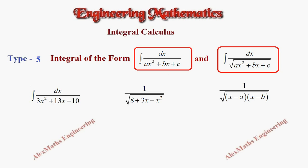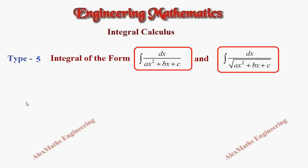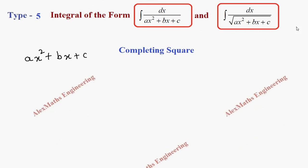First let's discuss the procedure. We have to take the quadratic expression present in the denominator, ax² + bx + c, and we are going to do the completing the square form. The procedure is: the coefficient of x² should be taken out as common, so it will be x² + (b/a)x + c/a.